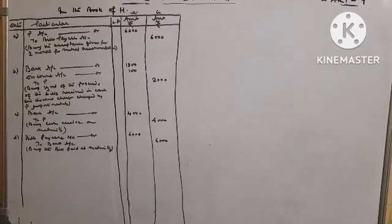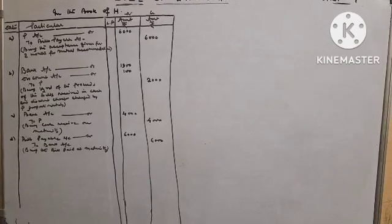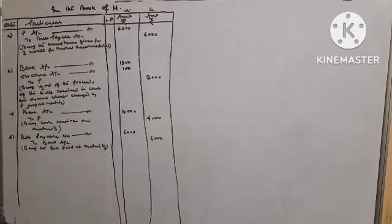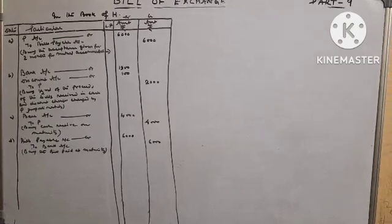One-third of the proceeds of the Bill received in cash. Entry will be Bank account debit, Discount account debit to P. Bank 1,900, Discount 100, to P 2,000.